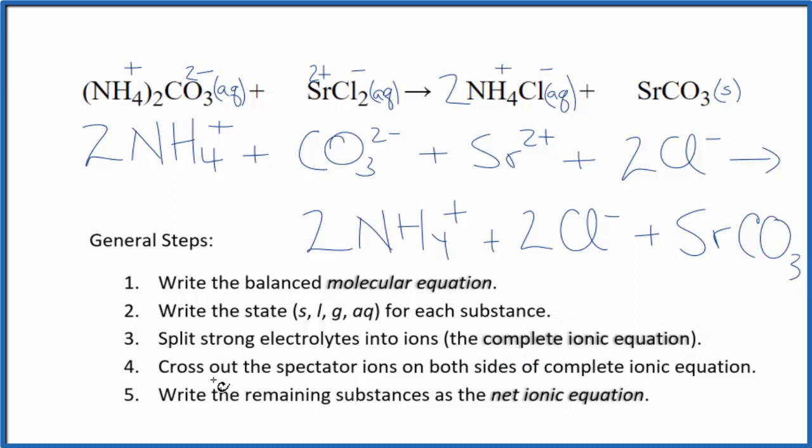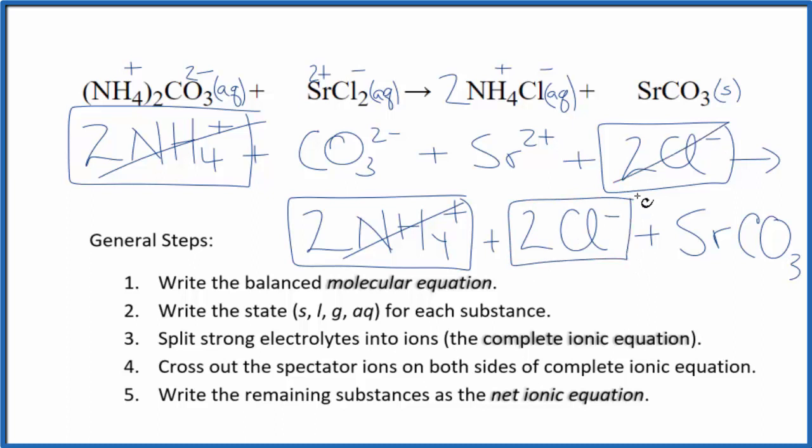Now we can cross out spectator ions. They're on both sides of the complete ionic equation. They haven't changed. We're really not interested in them. In the reactants, I see I have two ammonium ions. In the products, I also have two ammonium ions. I have two chloride ions. And then in the products, again, two chloride ions. Cross those out. What's left, that's the net ionic equation for ammonium carbonate plus strontium chloride.